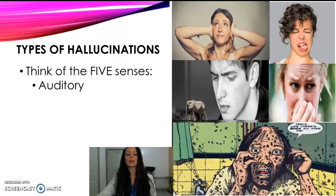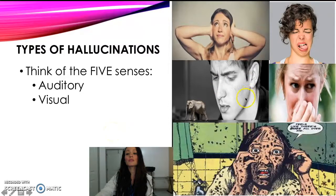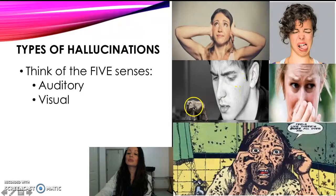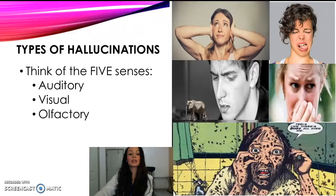The next type of hallucination is visual. With a visual hallucination, you see something that is not really there — for example, this person seeing an elephant walking across the bookshelf.